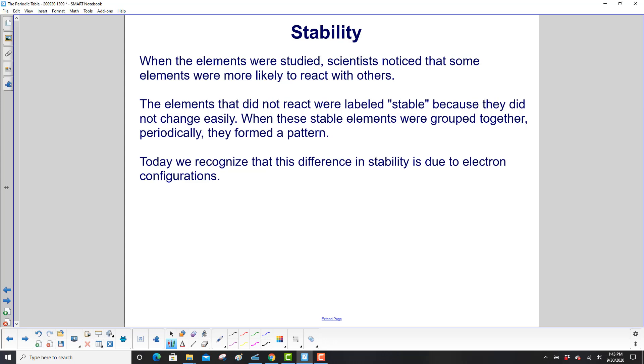When the elements were studied, scientists noted that some elements were more likely to react with others. The elements that did not react were labeled stable because they did not change easily. When these stable elements were grouped together, they formed a pattern. Today, we recognize that this difference in stability is due to electron configurations.